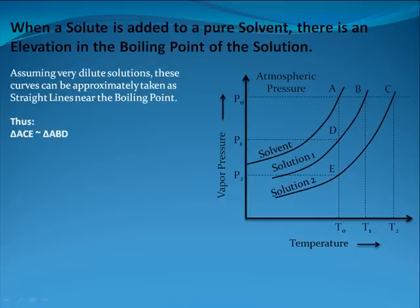Thus, triangle ACE is similar to triangle ABD. Therefore, AC by AB equals AE by AD.